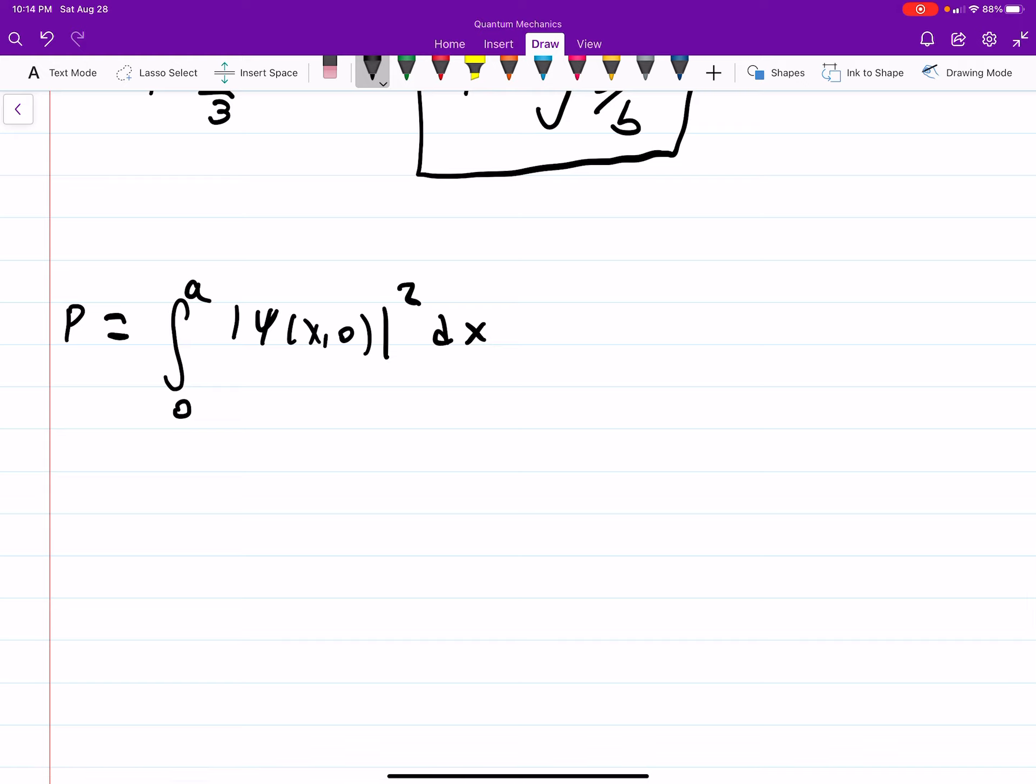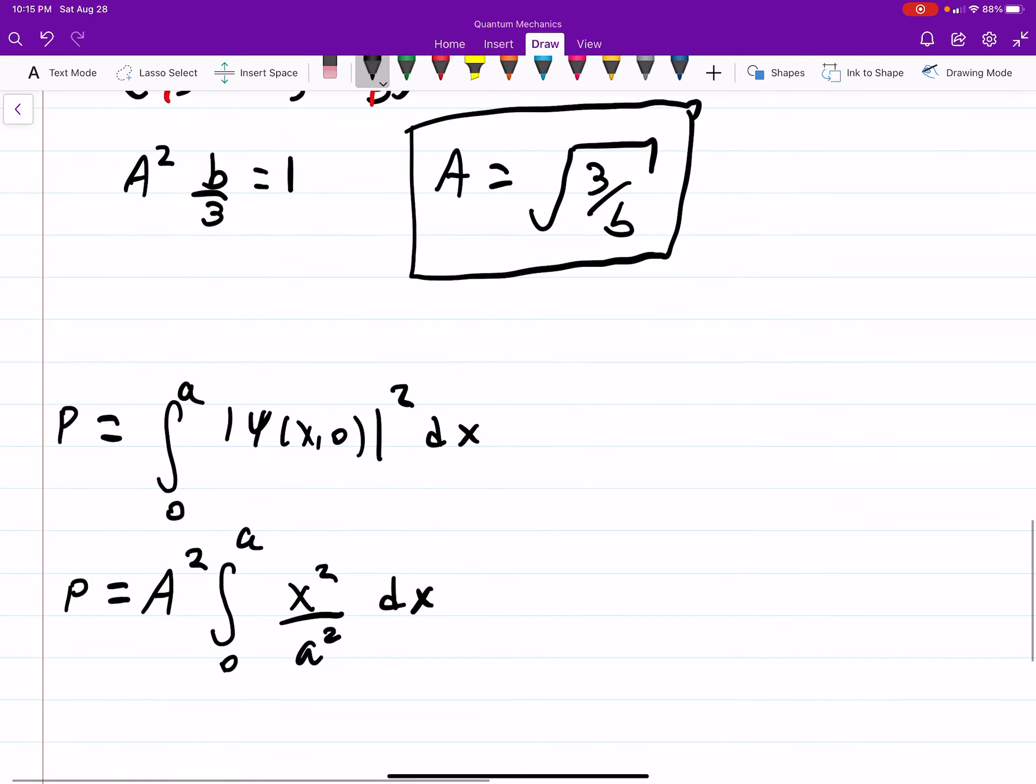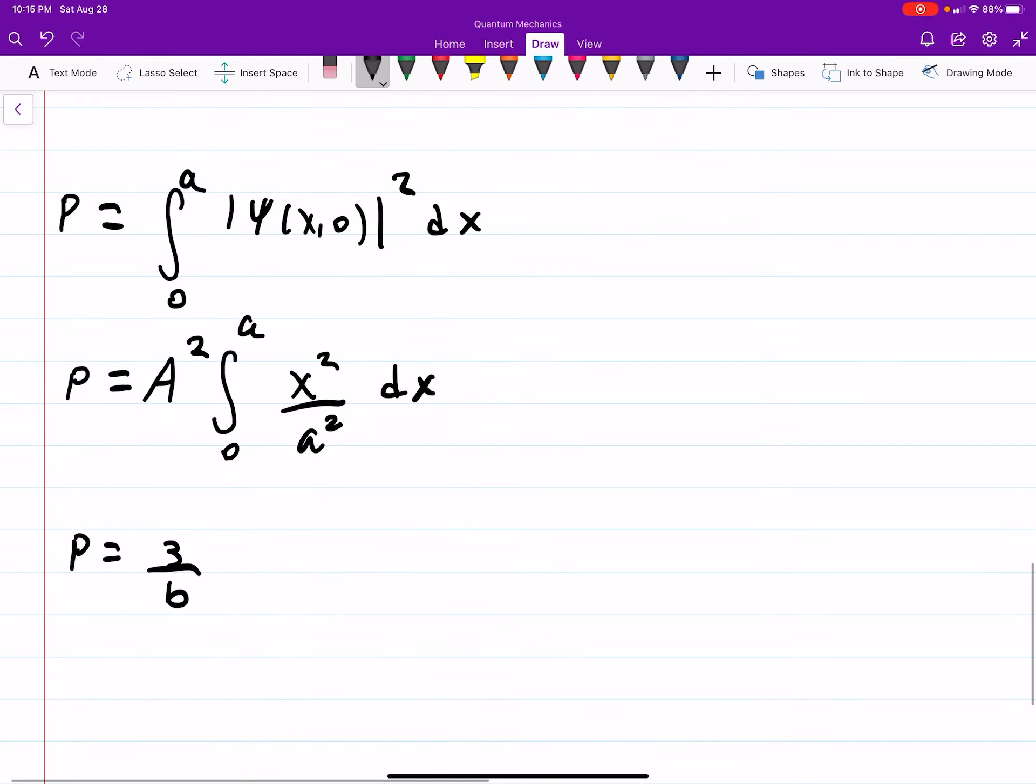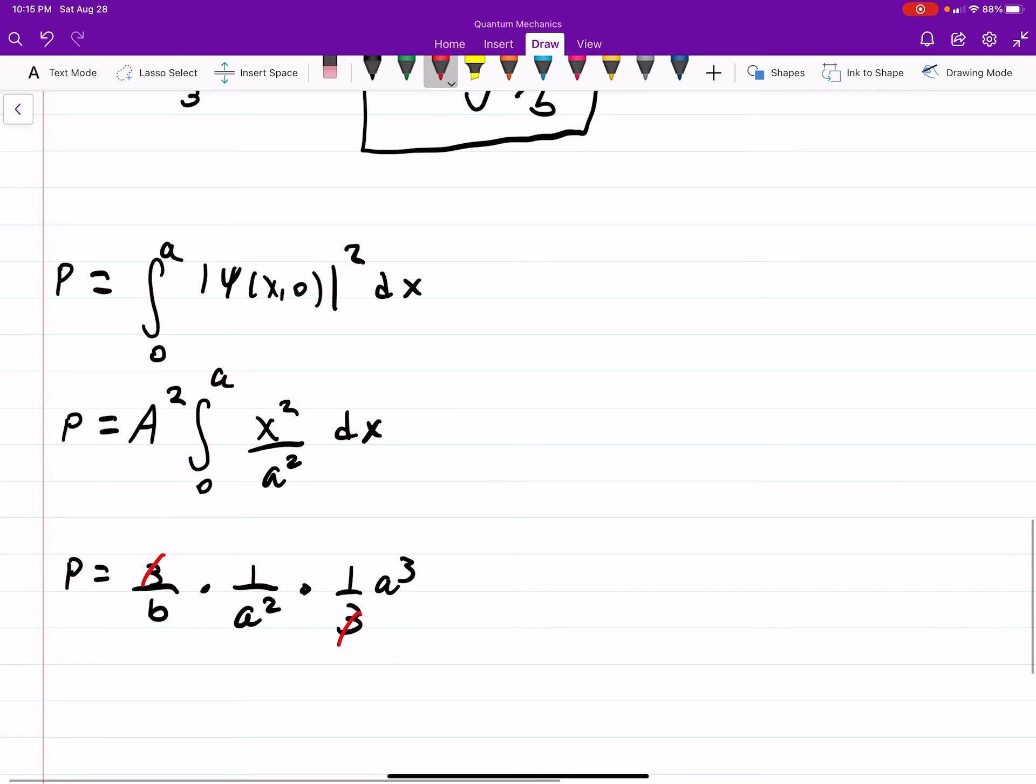So this is actually not bad at all. We have A squared integral from zero to A. X squared over little a squared dx. The only thing to remember is we already know what A is. And A squared is just going to be 3 over b. So our probability is 3 over b times 1 over a squared times 1 third a cubed. So just integrating that pulling out our constants. This 3 drops. This a drops with all one there. And your probability is equal to a divided by b.